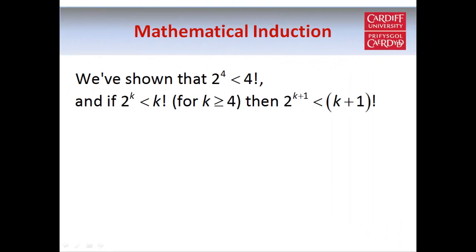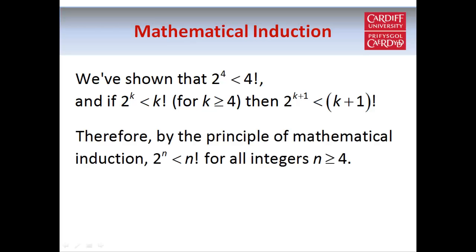So in summary we've shown that 2 to the power 4 is smaller than 4 factorial, which is the base step, and we've shown that if 2 to the power k is smaller than k factorial, then 2 to the power k+1 is smaller than (k+1) factorial, which is the inductive step. That's enough to prove that 2 to the power n is smaller than n factorial whenever n is greater than or equal to 4.